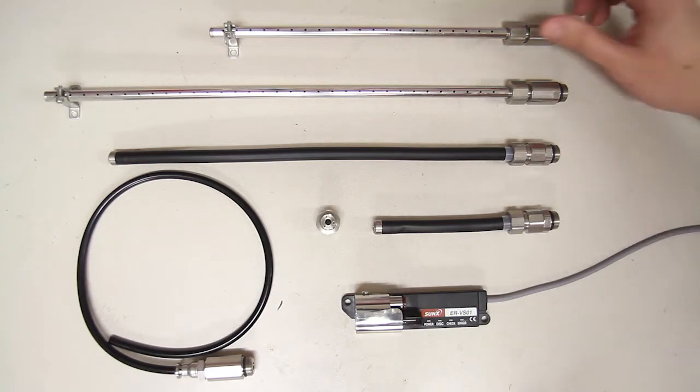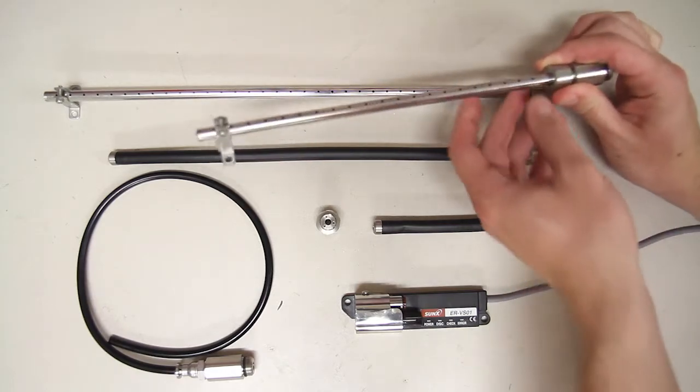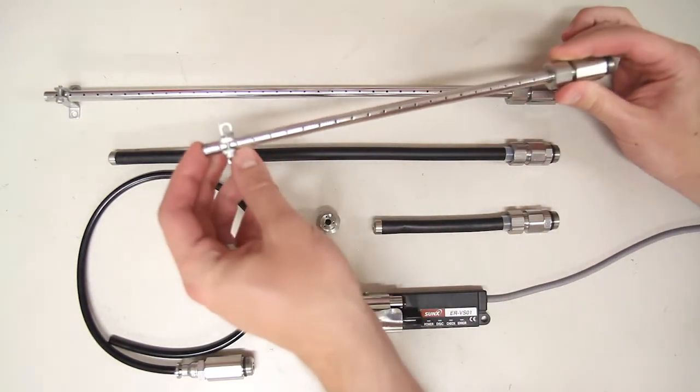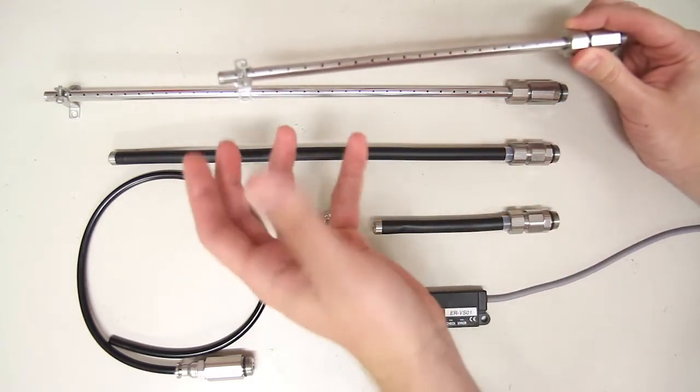Starting from the top down, we first have our bar nozzles. You'll notice that there are holes that span the length of the bar and that allows me to give an ionization pattern that's more of a wide area coverage.